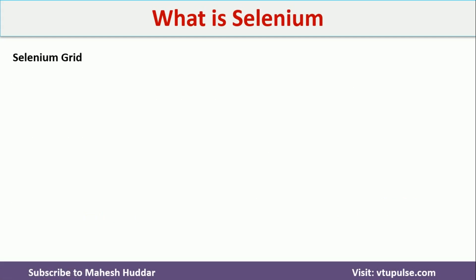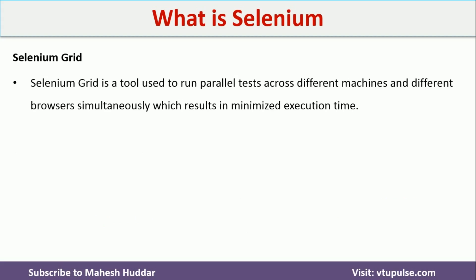The third component of Selenium is Selenium Grid. Selenium Grid is a tool used to run parallel tests across different machines and different browsers simultaneously, which results in minimizing the execution time.